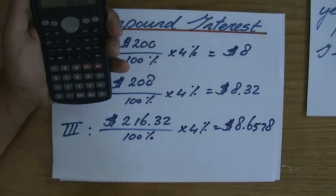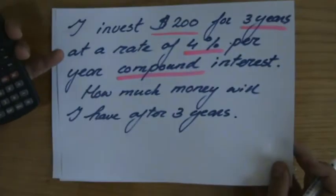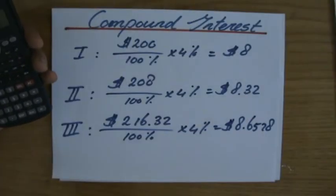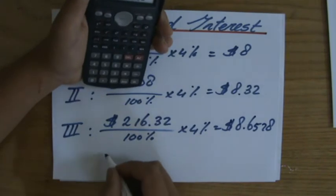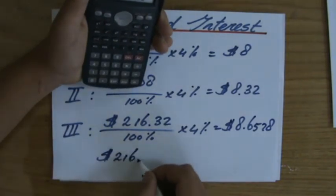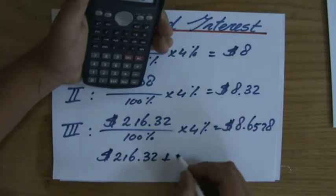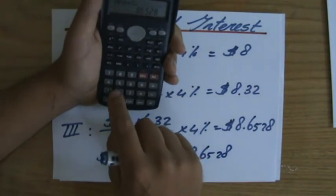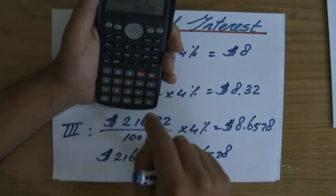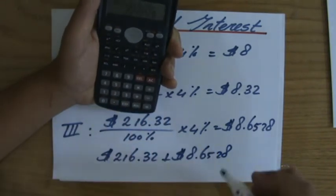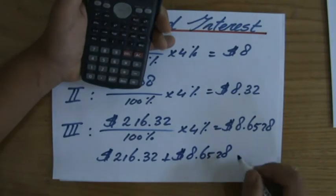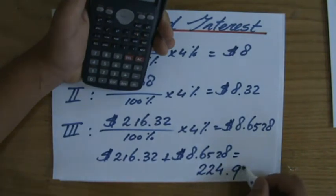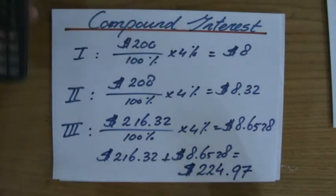The question was, how much money will I have in total? Well, at the beginning of year three it is $216.32. I'm going to get some more interest there, $8.6528, so I'm going to perform an addition now: $216.32 plus $8.6528. There we go, and then to two decimal places, because we're talking about money—$224.97. That will be the total amount of money I'm going to have after those three years.